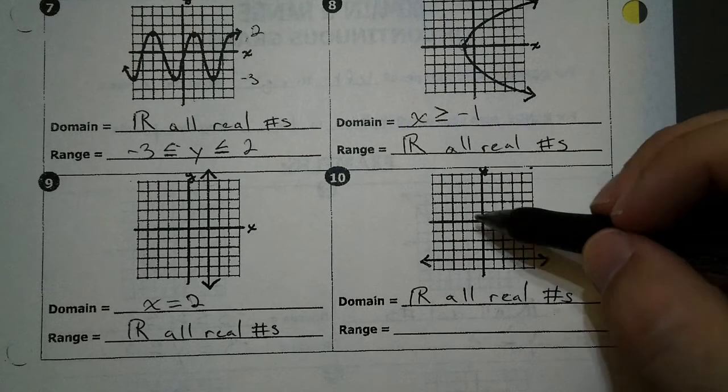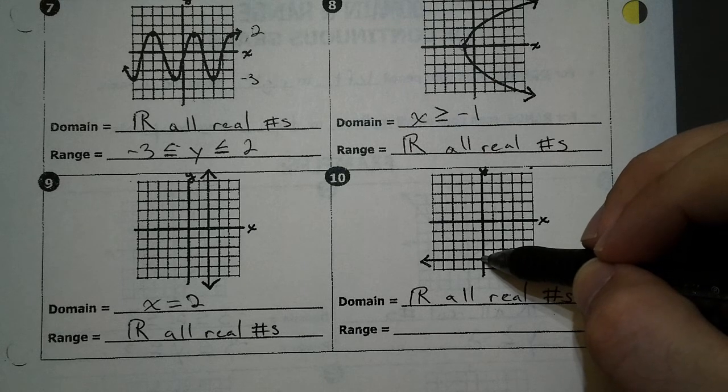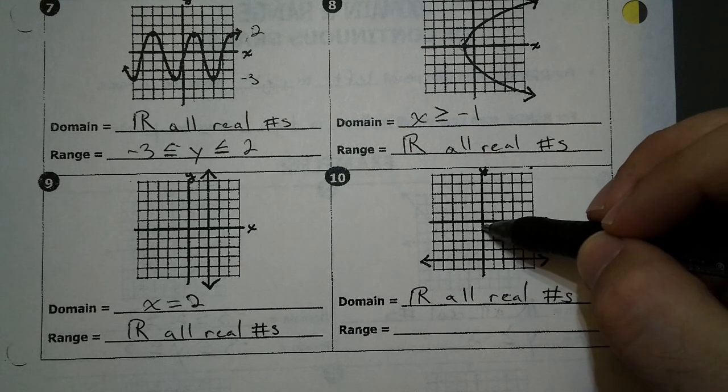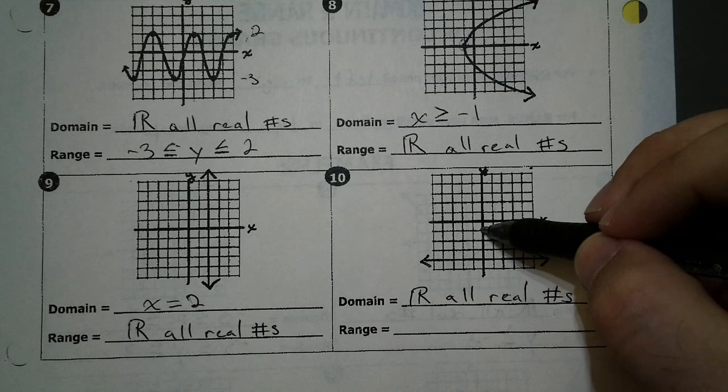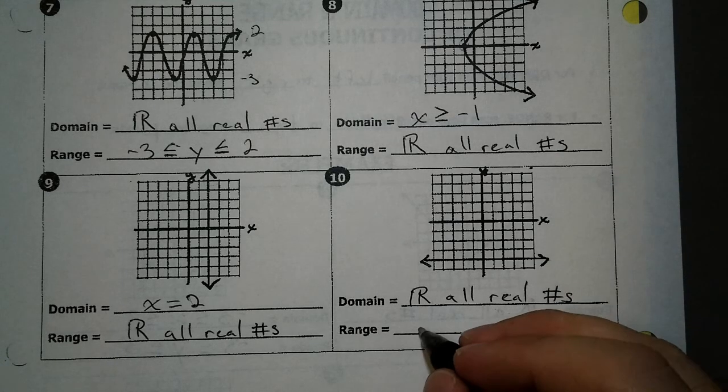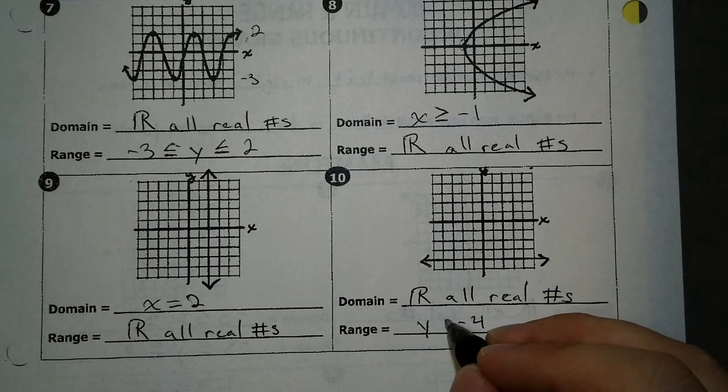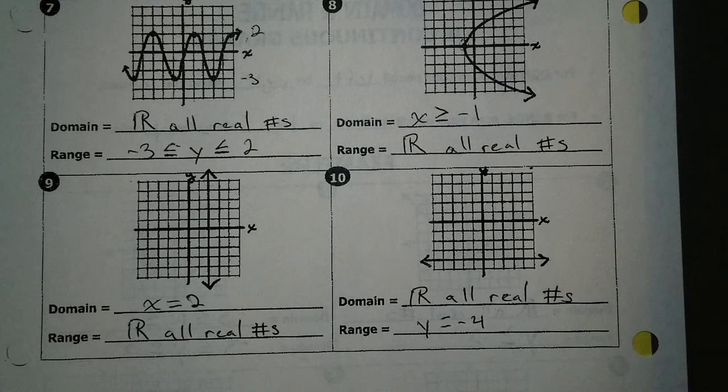For our range from the bottom to the top, that's the only y value that hits our line. It's at negative 1, 2, 3, and 4. So our y values, negative 4, and they're always going to be negative 4. So it's just y equals negative 4.